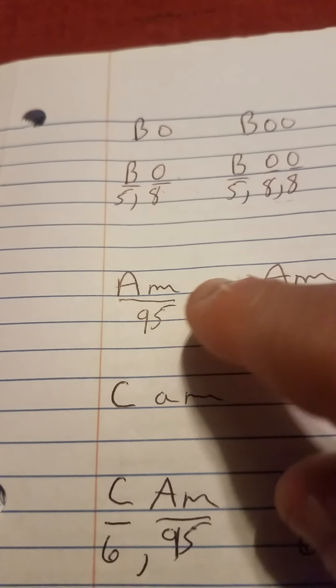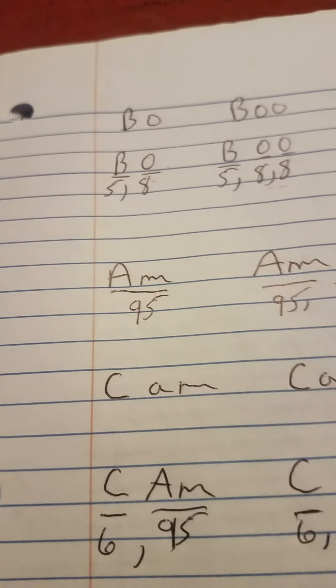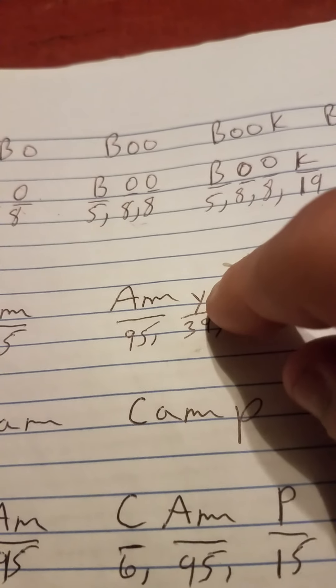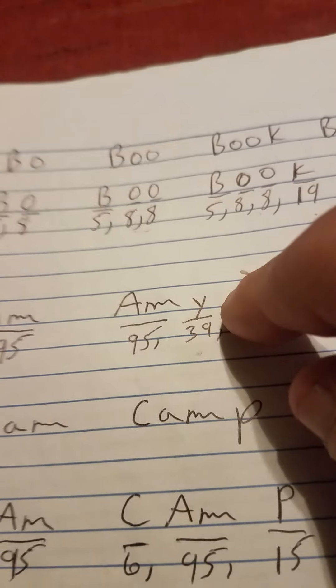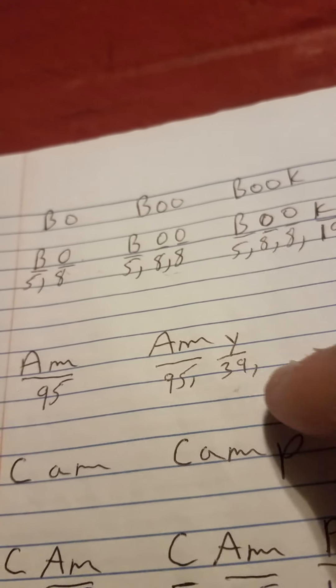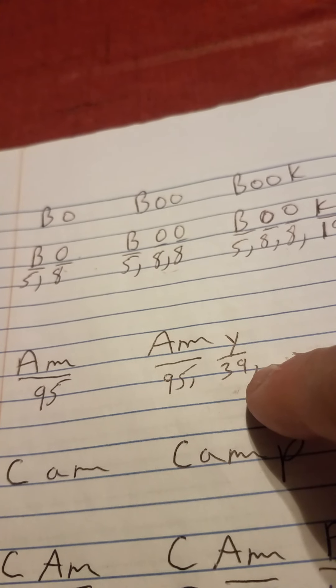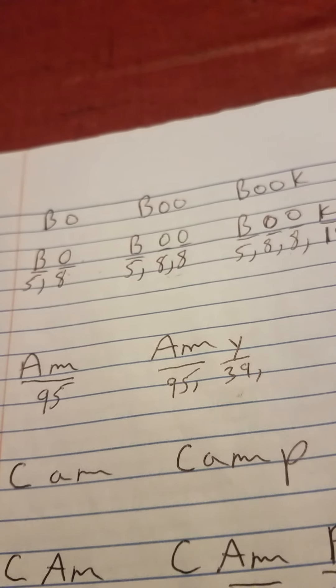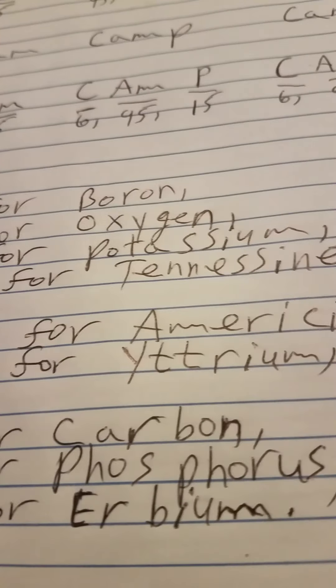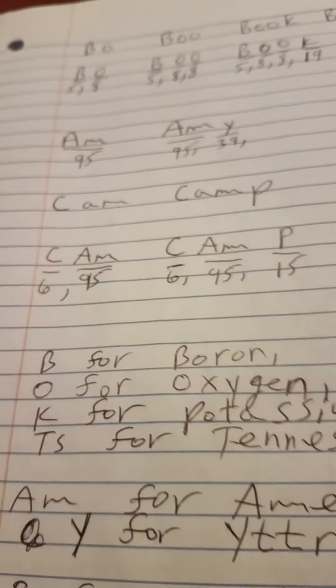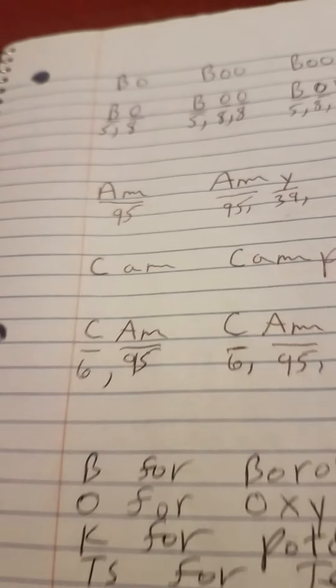Then I went down to capital AM for Americium. And the atomic number is 95. And I added a Y for Yttrium, which is 39 behind that. So I got 95 for Americium and 39 for Yttrium. And I got the name Amy. All this I'm going to write in the description box below.